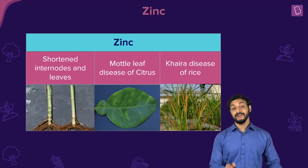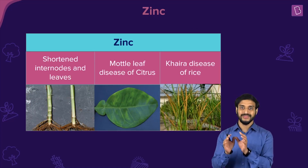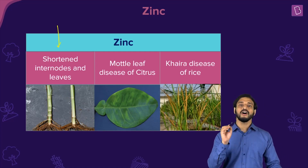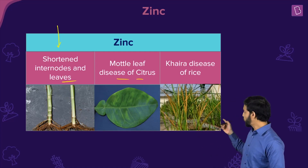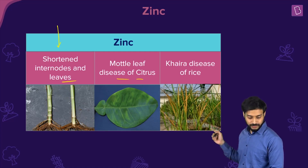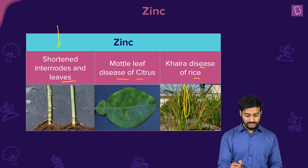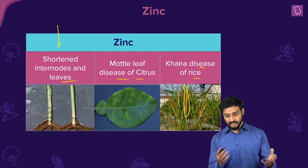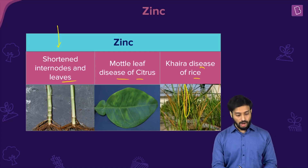Zinc deficiency is important — note it carefully as questions are commonly asked from this area. Symptoms include shortened internodes and mottle leaf disease of citrus — where the leaf is malformed. It also causes yellowing and discoloration of rice plant leaves, along with stunted growth.